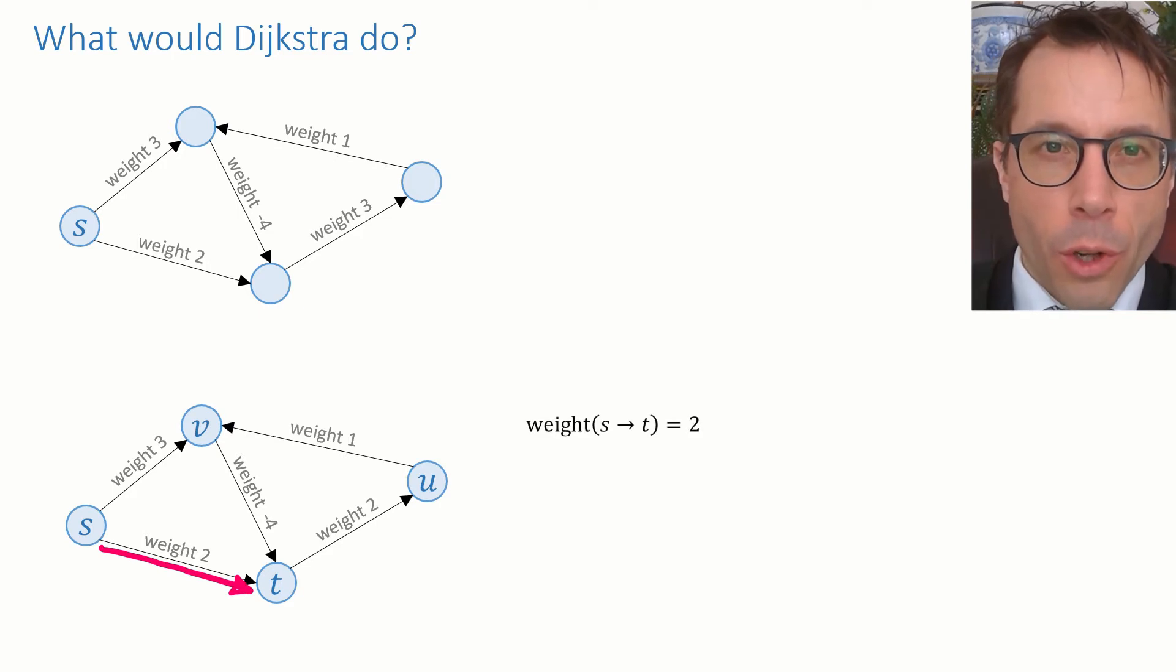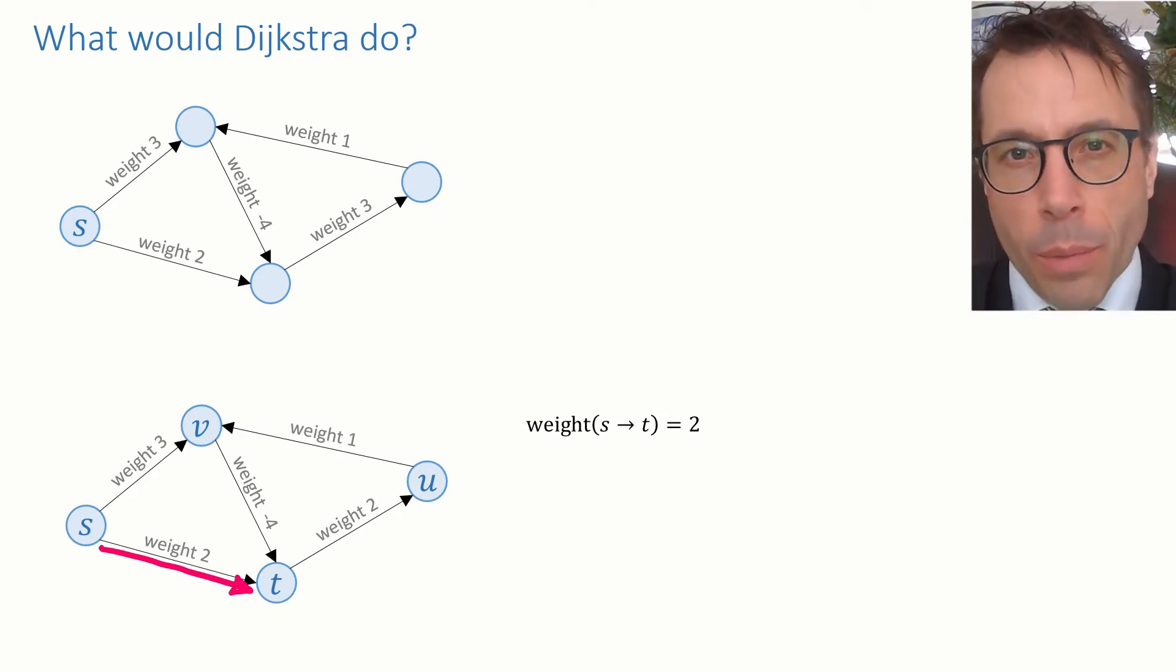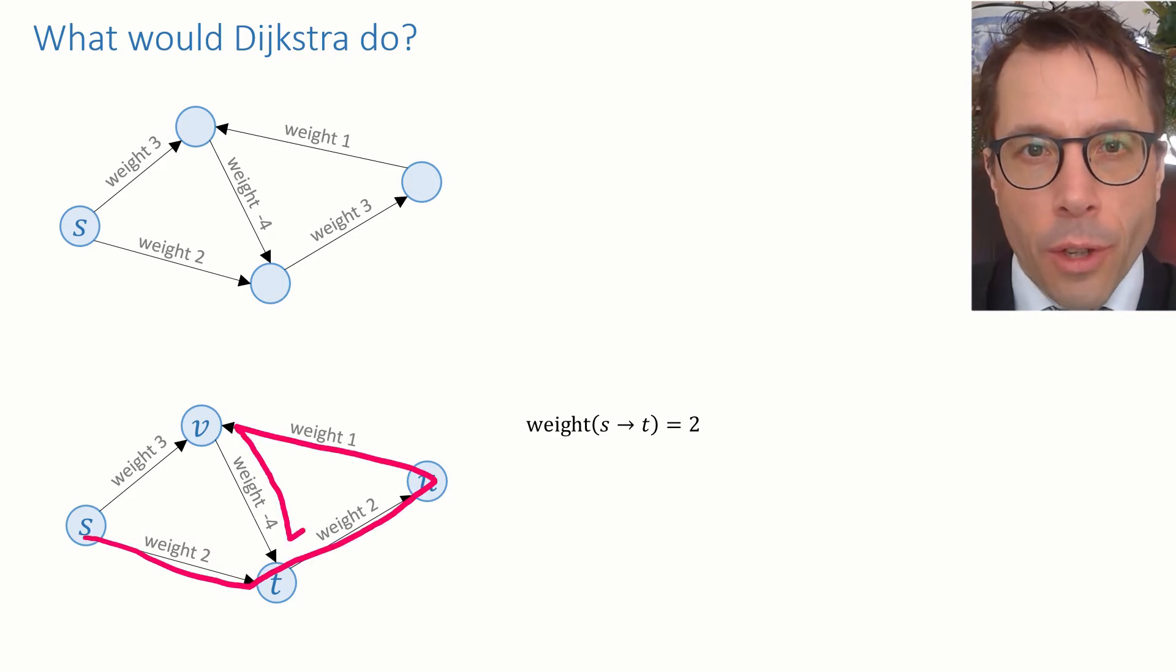So let's look at this infinite loop a bit more. Let's look at the bottom graph and let's think about a minimum weight from s to t. Here's one path, the simple path consisting of just one edge, which has weight 2. And here's another path, s, t, u, v, then back to t, which has weight 2 plus the sum of weights around the cycle, which comes to 1 in total.